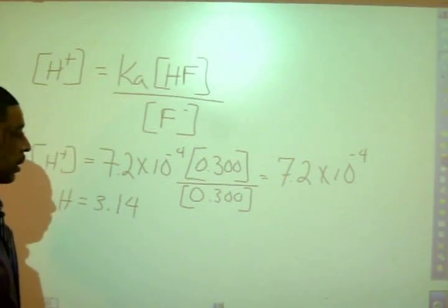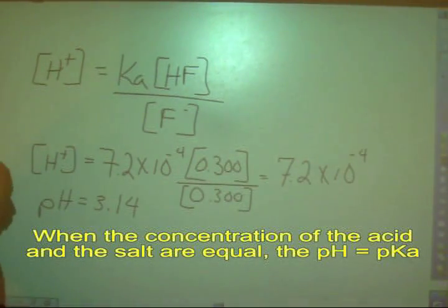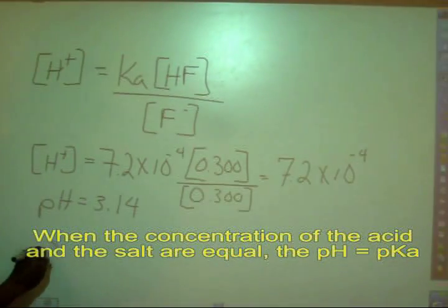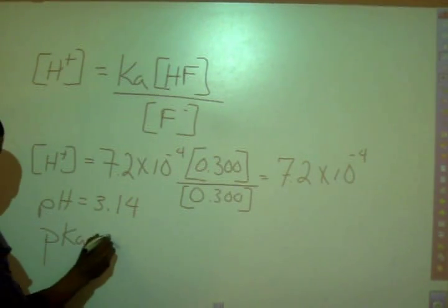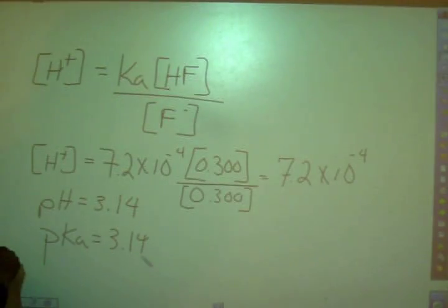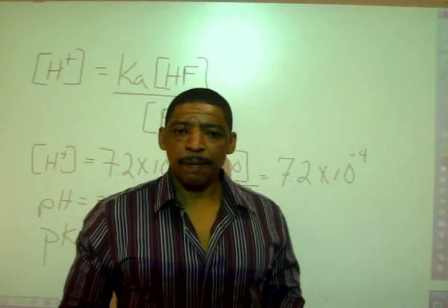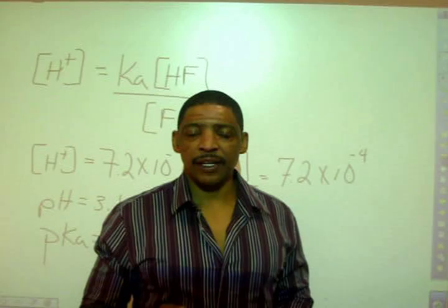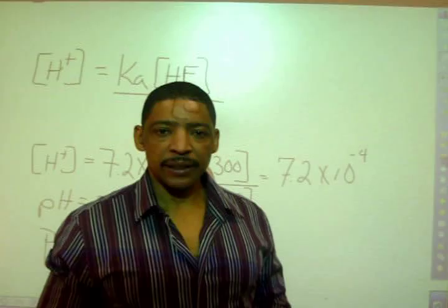And the pH of the solution will be 3.14, which also represents our pKa. So for a buffer solution where the weak acid and the salt concentrations are the same, the pH will be equal to the pKa.